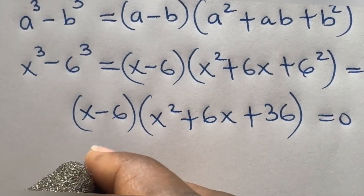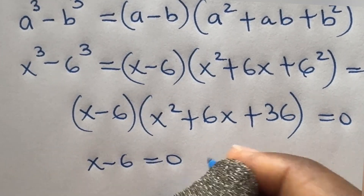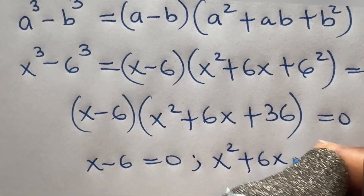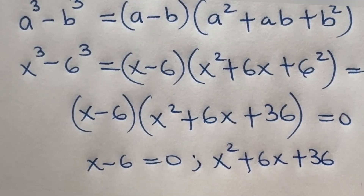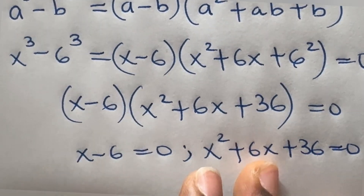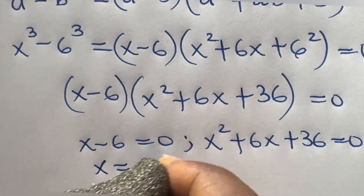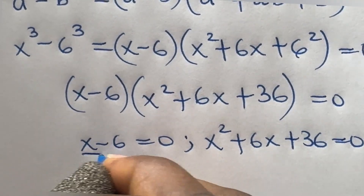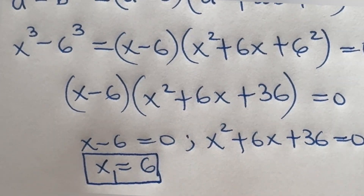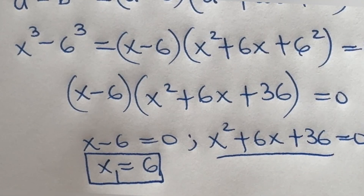From here we can say either x minus 6 equals 0 or x squared plus 6x plus 36 equals 0. From the first factor, we get x equals 6, which was our initial solution — I'll call this x1. We can then proceed to solve the quadratic equation to get the other two values.